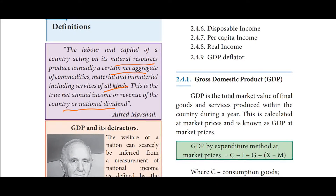This is Alfred Marshall's definition. Labor and capital of a country acting on its natural resources — labor means human work, capital means tools and equipment, natural resources means land — produce annually a net aggregate of commodities, material and immaterial, including services of all kinds. This is the true net annual income or revenue of the country, or national dividend.